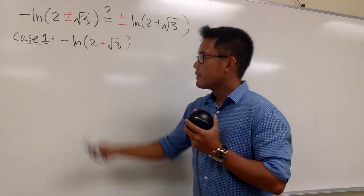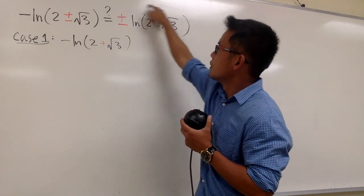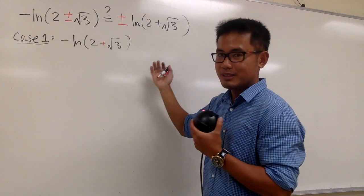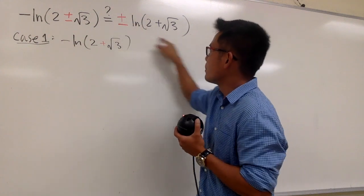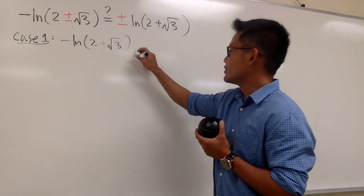And as you can see, negative ln of 2 plus square root of 3 is this part right here. So we are done with one part. This is it because it matched with one of the parts right here. So this is pretty much checked by itself.